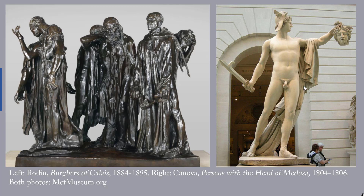Rodin's Burgers of Calais, 1884 to 1895, is based on a grim episode from the Hundred Years' War between England and France. In 1347, the English had been besieging the French coastal town of Calais for 11 months. With no relief in sight, the townspeople sued for surrender. King Edward of England replied that they would be spared if six of their leaders emerged from the town carrying the keys to the town and castle, wearing nooses around their necks. Six men volunteered for what seemed to be a suicide mission — that is the moment Rodin depicts. The lives of the six Burgers were eventually spared by the intercession of Edward's wife, but the English took and held Calais for more than a century.